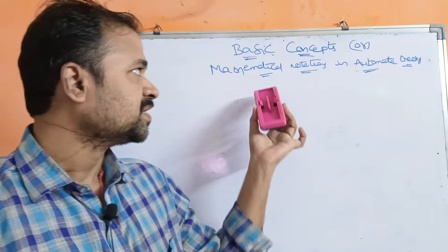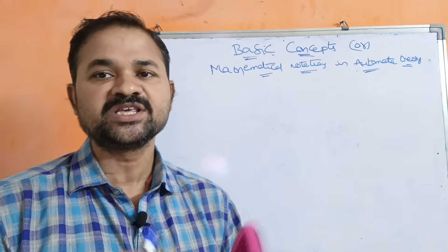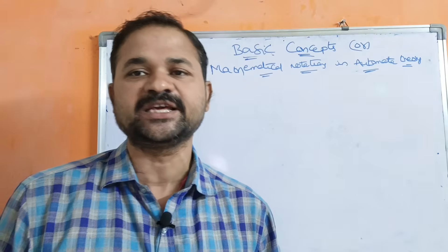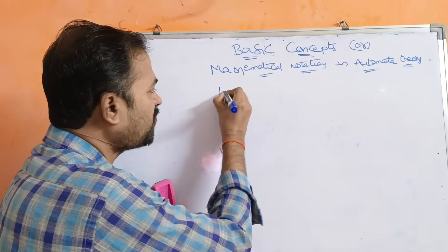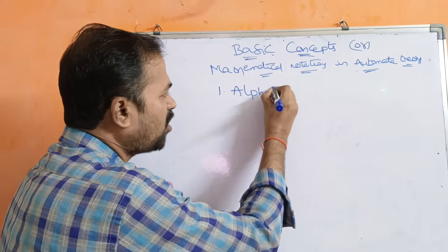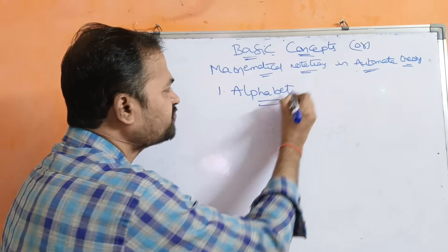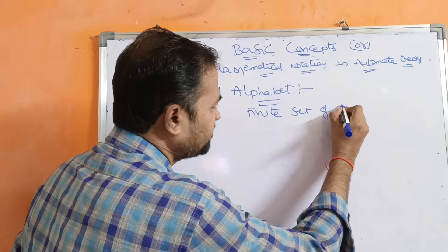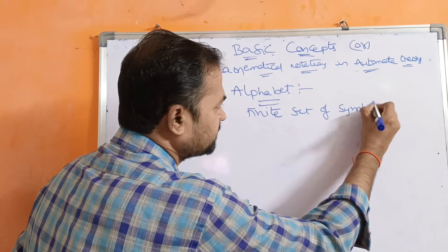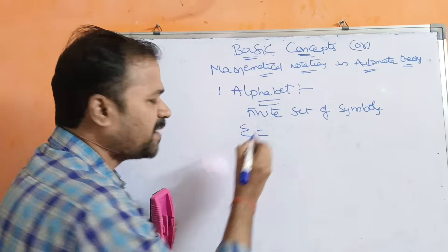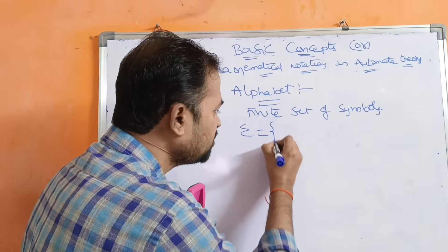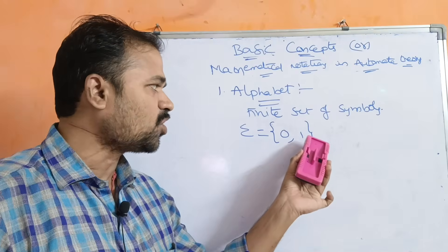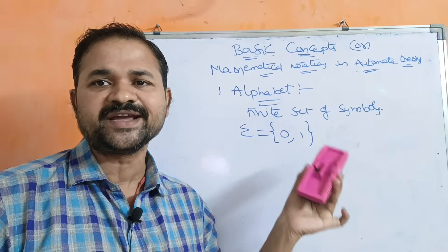Let us discuss the basic concepts and mathematical notations used in automata theory. The first concept is alphabet. An alphabet is a finite set of symbols, represented by sigma. For example, sigma = {0, 1} — here 0 and 1 are symbols, and this is called a binary alphabet because it contains two symbols.